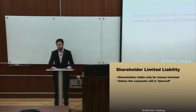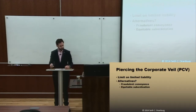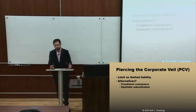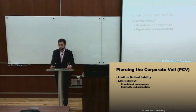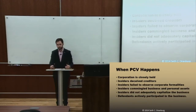In the case of piercing the corporate veil, shareholders can end up paying out of pocket for corporate wrongdoing or debts. Piercing the corporate veil has some alternative doctrines — alternatives could be a fraudulent conveyance or an equitable subordination. We'll focus on piercing. So when does piercing happen?